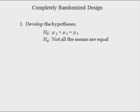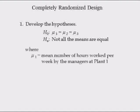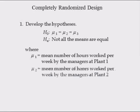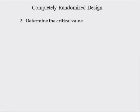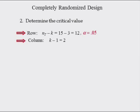In step one, we state the hypotheses. The null hypothesis is μ1=μ2=μ3. The alternative hypothesis is that not all the population means are equal — meaning at least one stands out — where μ1, μ2, μ3 are the mean hours worked by all managers of plants 1, 2, and 3 respectively. In step two, we determine the critical value of this one-tailed test from the F-distribution table, in the row corresponding to denominator degrees of freedom equal to 12, significance level 0.05, and numerator degrees of freedom equal to 2. Hence, the critical value F-alpha equals 3.89.